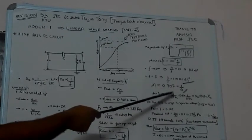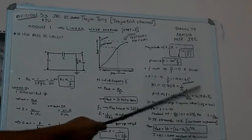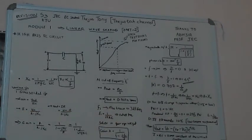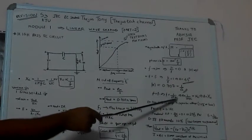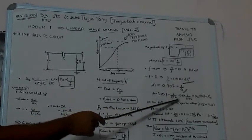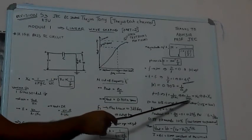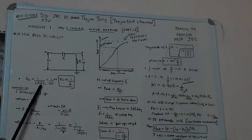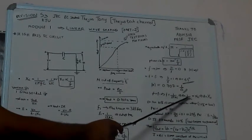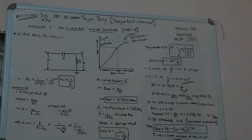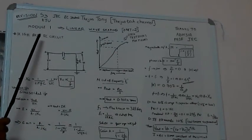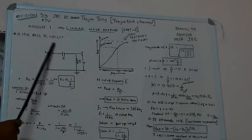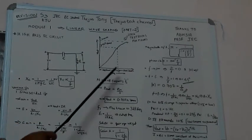We know that f1 equals 1 by 2πRC, so R equals 1 by 2πf1C, which is equal to XC, because XC equals 1 by 2πFC. This means R equals XC. This is a special condition: at the cutoff frequency of a high pass RC circuit, the resistance is equal to the capacitive reactance.